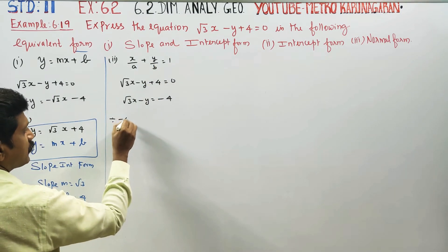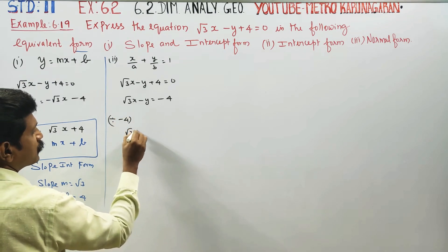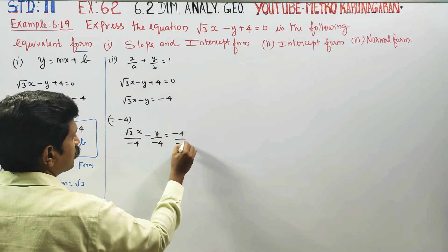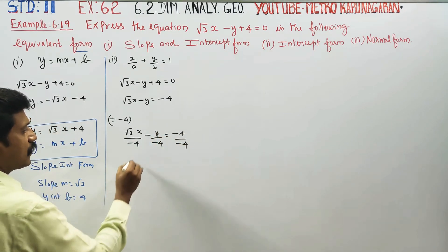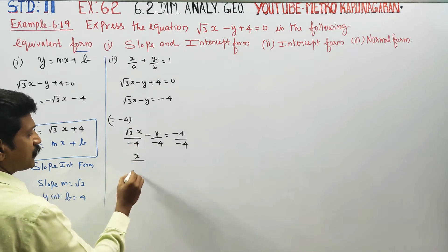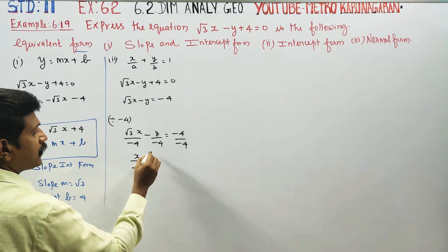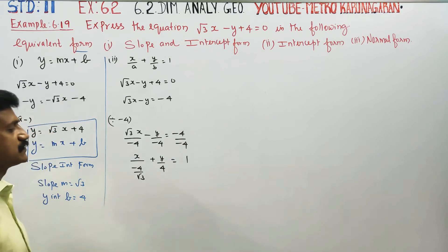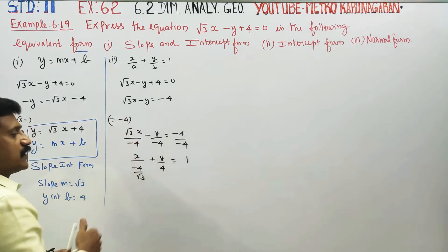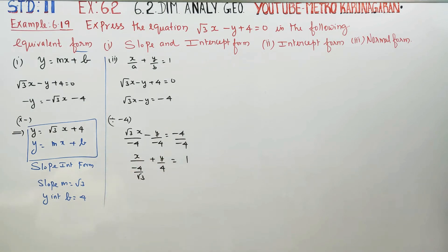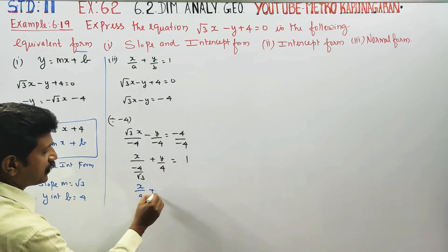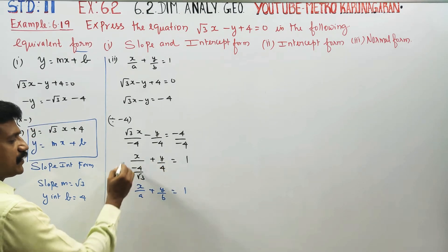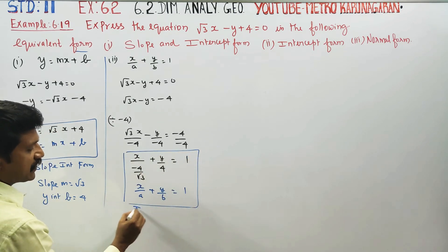Divide all the terms by minus 4. For root 3x by minus 4, minus y by minus 4 is equal to minus 4 by minus 4. This gives x by (minus 4 by root 3), and the minus signs cancel, giving plus y by 4 is equal to 1. Then x by a plus y by b is equal to 1 — this is the intercept form.